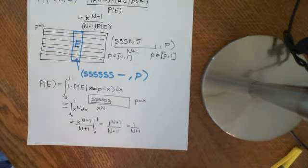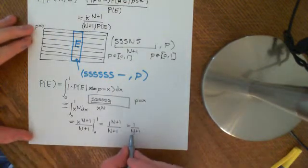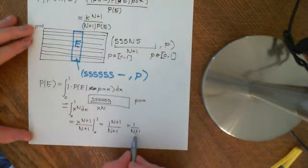OK, so we're nearly at the end of this calculation for Laplace's rule of succession. We calculated in the previous video that the probability that E occurs is equal to 1 over N plus 1.